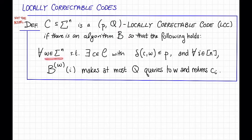For all received words W of length N, so that W is close to some codeword, that is, so that there exists some codeword C, so that the Hamming distance, or relative Hamming distance, between C and W is at most P. And for all positions I, when I run this algorithm with query access to W on input I, the algorithm makes at most Q queries to W, and returns CI, the ith symbol of the codeword.